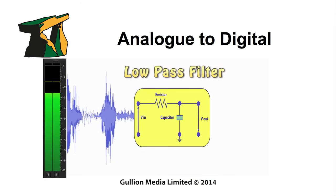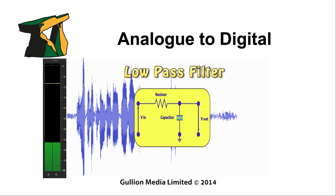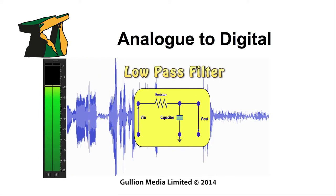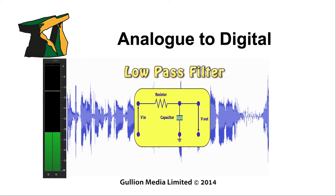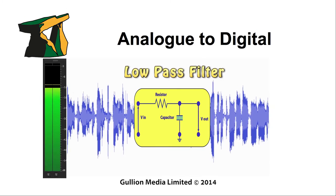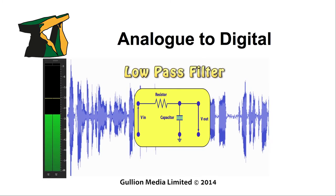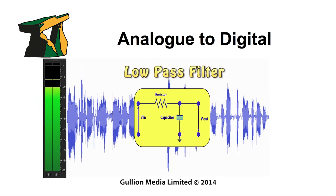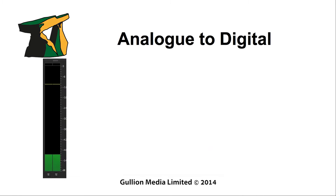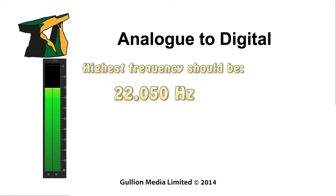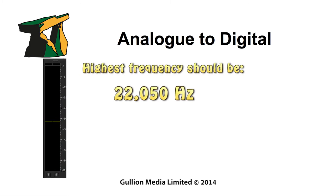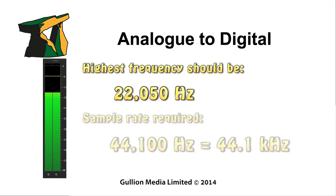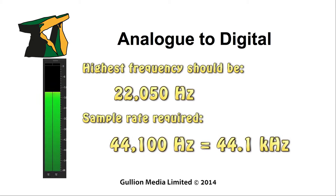To compensate, a low-pass filter is used before the analog to digital conversion occurs, to help block high frequencies. It was determined that the highest frequency to be recorded was 22,050 Hz, which required a sample rate of 44.1 kHz, which became the standard for CD audio.